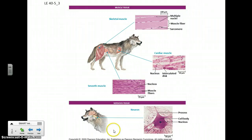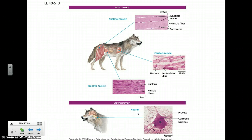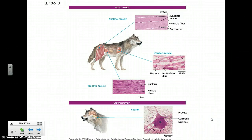Nerve tissue — a whole chapter on that we'll get to. The neuron is the basic unit, forming this network that allows electrochemical signals to be sent around your body and to communicate in this electrochemical fashion.